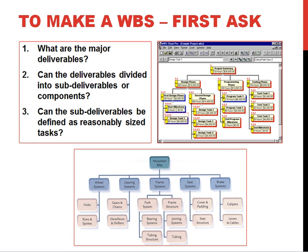To make a WBS, the first thing we have to ask ourselves: what are our major deliverables? Can these deliverables be divided into subtasks or components? And as we subdivide those down, can we define them into reasonably sized tasks that we can make a good time estimate for? Here we see a couple examples of function trees on either project management or on the design of a mountain bike.